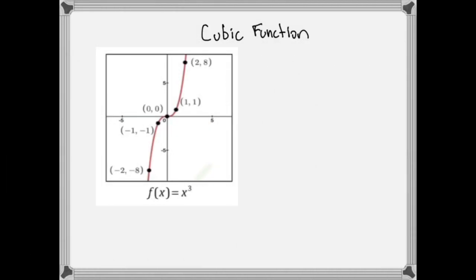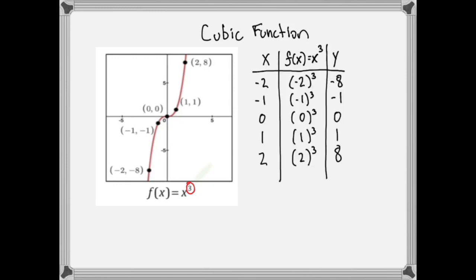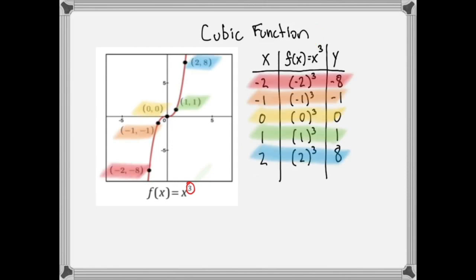This next one is a cubic function. The cubic function is kind of like the last function we did, except it is raised to the third power. It doesn't have a specific name, even though a lot of people call it the squiggle — and I do as well, but that's not the technical name. Taking the values negative two through positive two and plugging them into that function, we get those y values, and a smooth curve goes right through these points. That is our cubic function, or the squiggle.